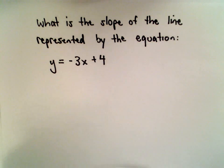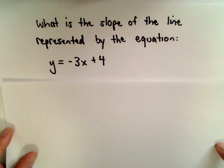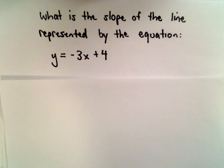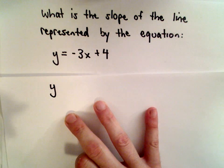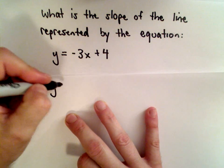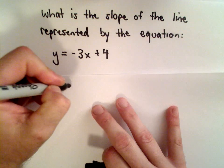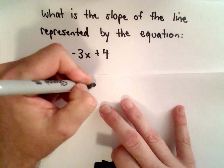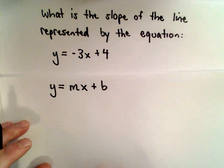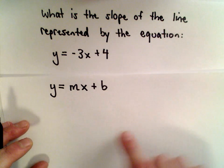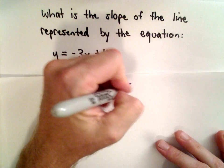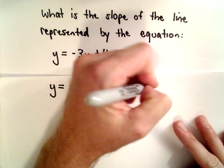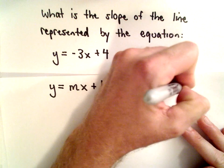The first way I'm going to do is really just kind of knowing a standard form in algebra. So if we have the y all by itself on one side of the equal sign, like we do here, and we can write the form y equals mx plus b, this is what's known as slope-intercept form.